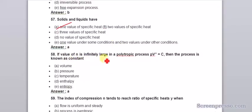If the value of n is infinitely large in a polytropic process PV equals C, then the process is known as constant volume.